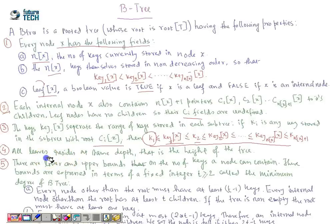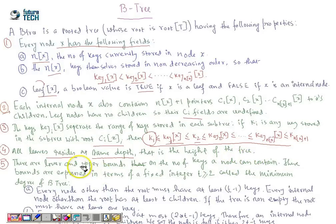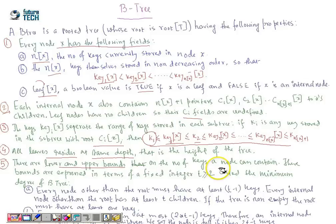All leaves reside at the same depth, which is the height of the tree. If the height is h, then all leaf nodes reside at depth h. There are lower and upper bounds on the number of keys a node can contain, and there is a fixed integer T, which should be greater than or equal to 2, called the minimum degree of the B-tree.